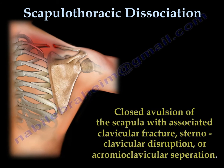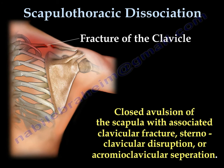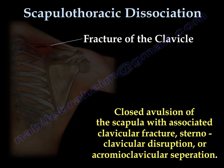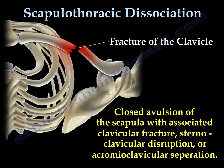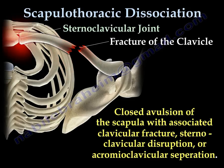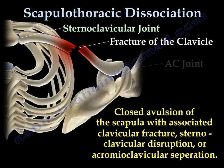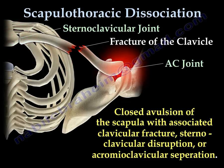The skin around the shoulder is bruised but intact, but underneath there is an avulsion of the scapula with associated clavicle fracture, sternoclavicular disruption, or AC joint separation.